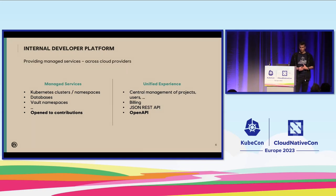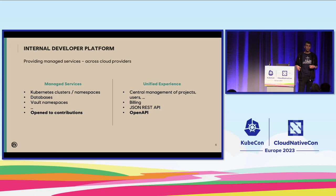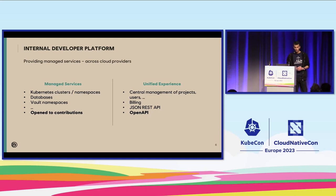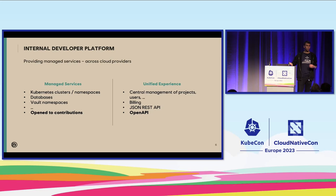At Ubisoft, we're building video games. We have lots of things to host: video games, online services, e-commerce websites, and so on. We are deploying on public cloud providers a lot, and also our own internal private cloud. The main issue is that depending on the cloud provider, we have different managed services to set up. For example, if a team wants to set up a Kubernetes cluster, it will be done differently on AWS, GCP, or our private cloud.